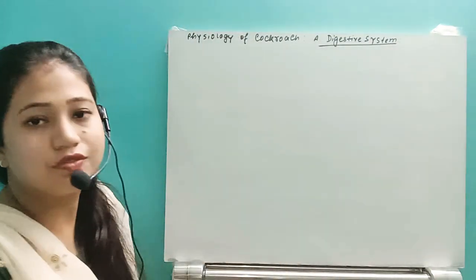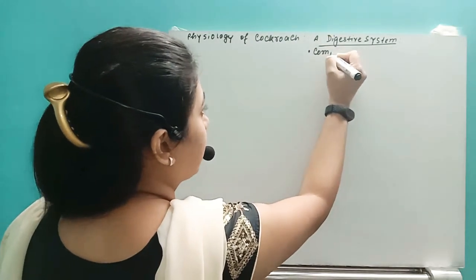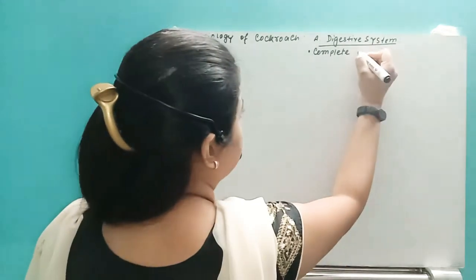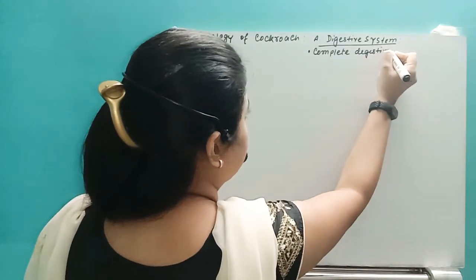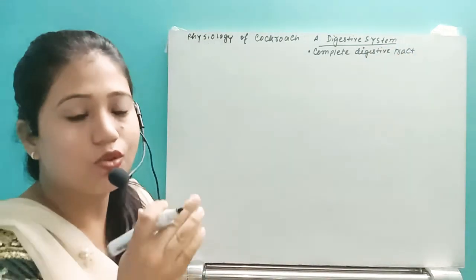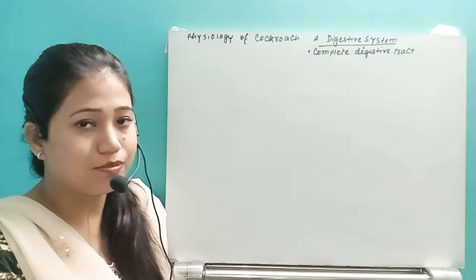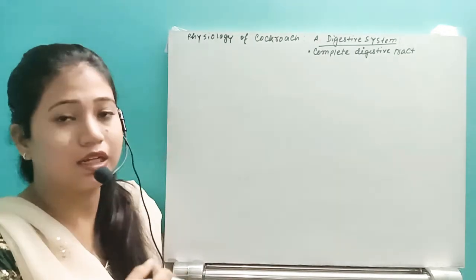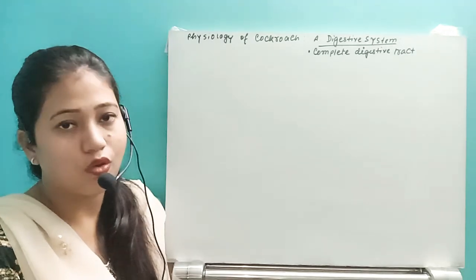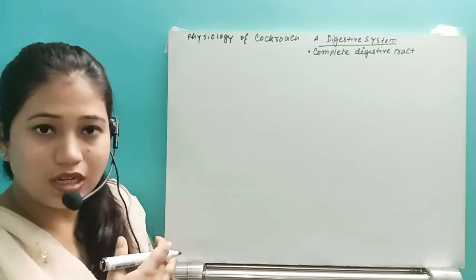So the frog is going to have a complete digestive system — a complete digestive tract. What is the meaning of a complete digestive tract? This organism is going to have a separate mouth and a separate opening called the cloaca, and joining this mouth and the cloaca they have one long alimentary canal.